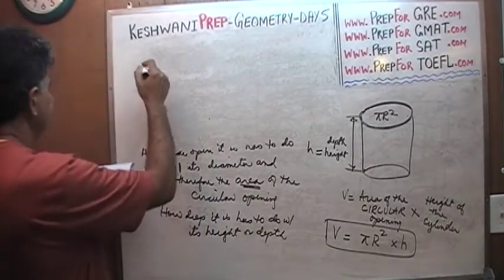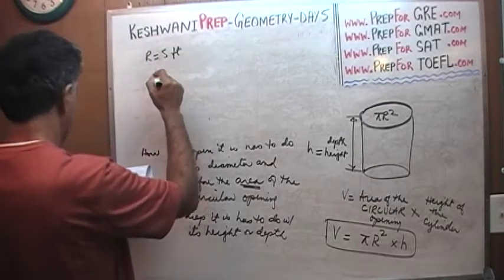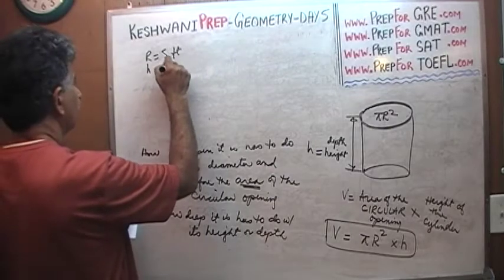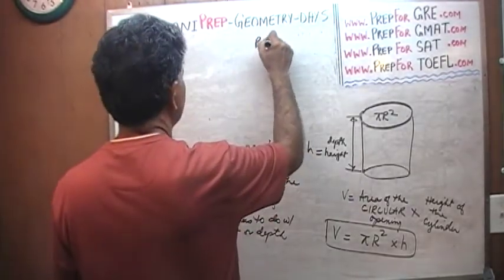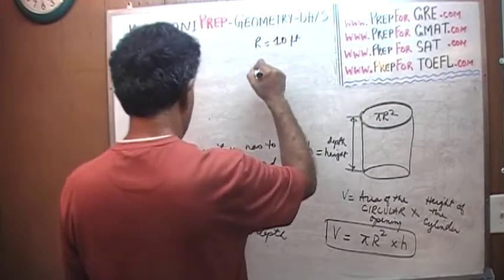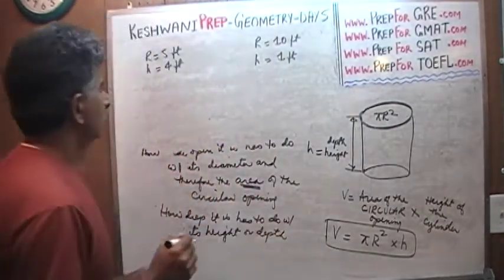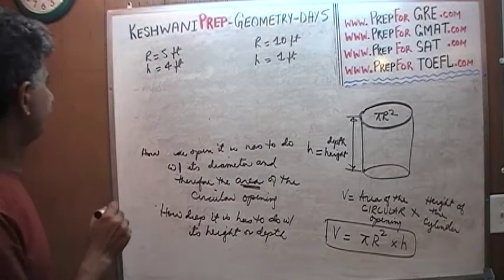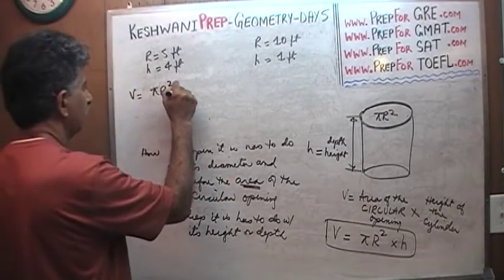I have one cylinder here which has a radius of 5 feet and a height of 4 feet. And then I have another cylinder which has a radius of 10 feet and a height of 1 foot. Let's figure out their volumes and which one has the bigger volume. Volume is pi r squared times h.